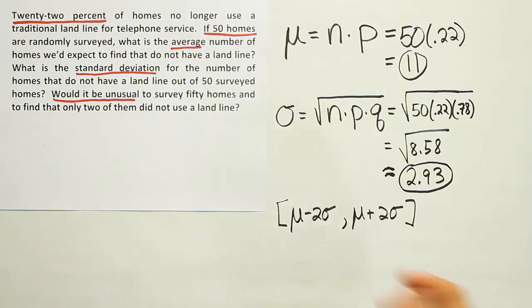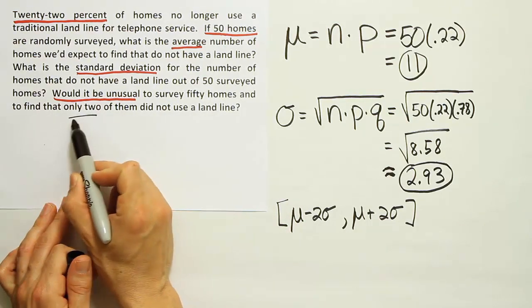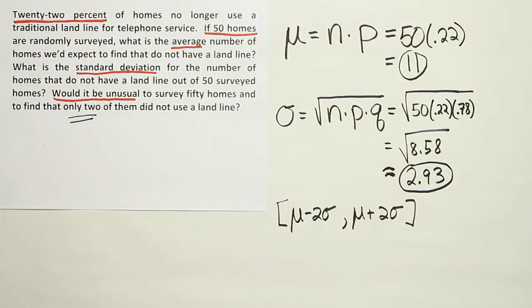If we survey 50 homes, this will give us what we typically would expect to get for this measure, which is the number of homes that no longer have a landline in them. So we can work this out and then compare the number they asked us to. They said would it be unusual to survey 50 homes and find that only two of them do not use a landline.